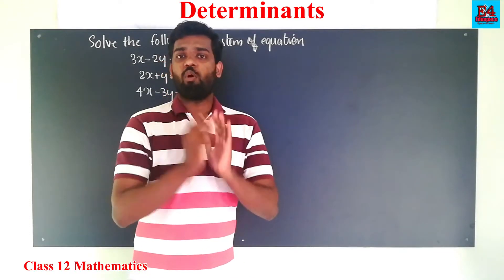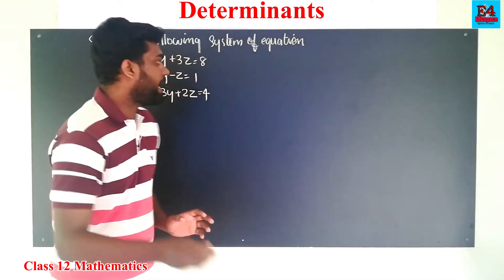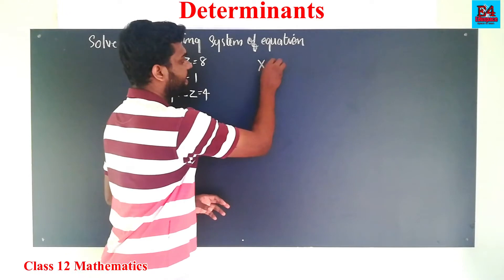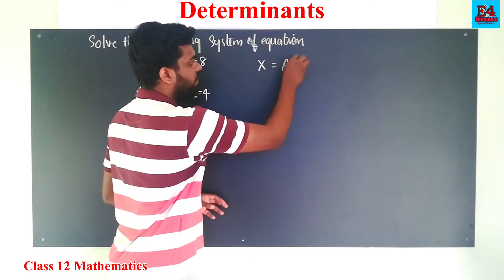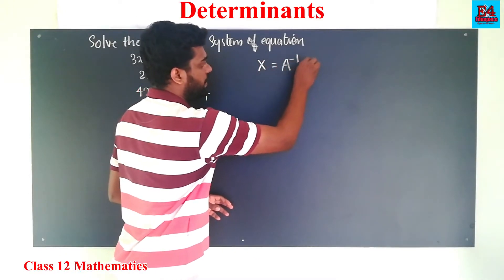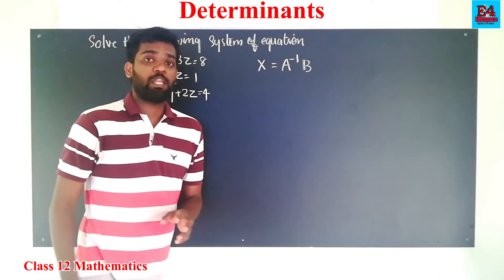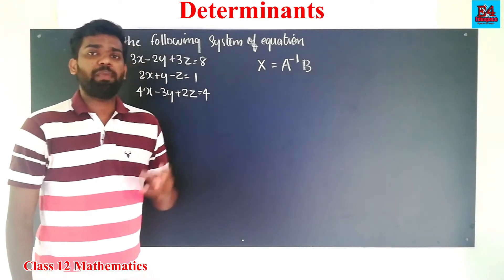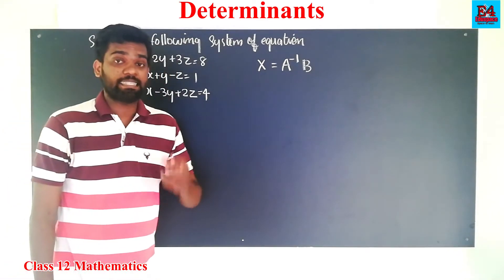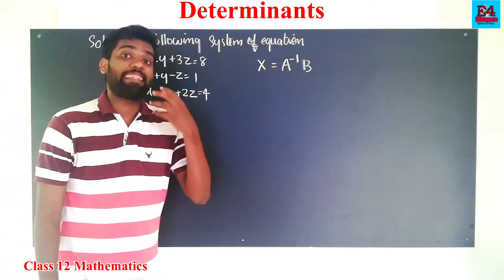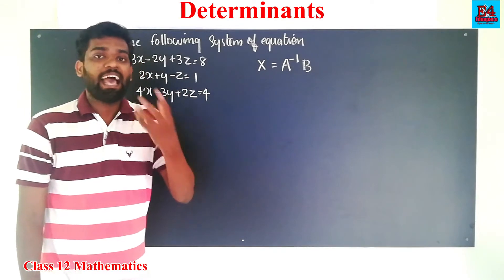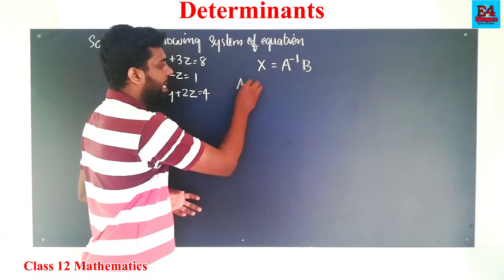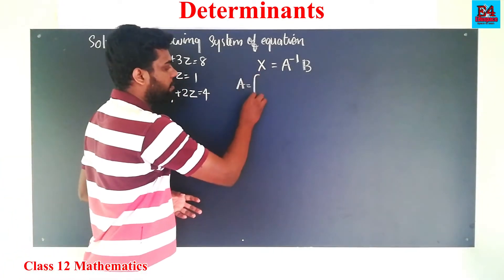Now we will solve this problem. You know the formula: x is equal to A inverse into B. Now, what is x? What is A? What is B? That's the question. A equals a matrix, and x equals A inverse into B.